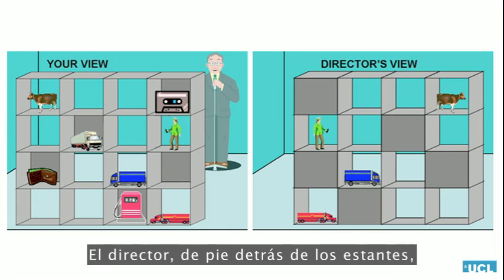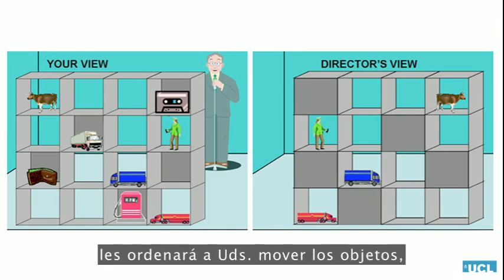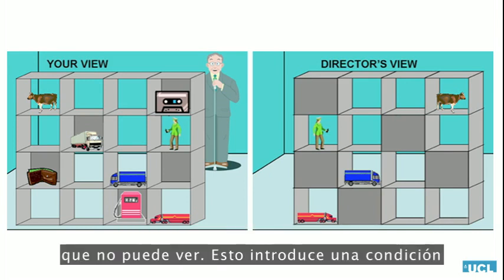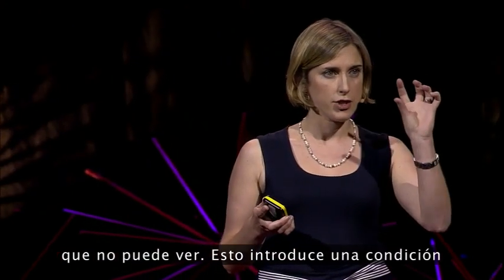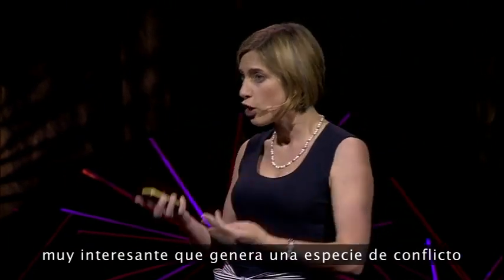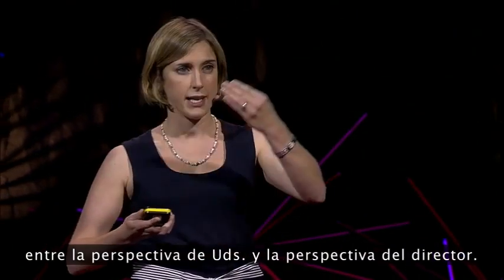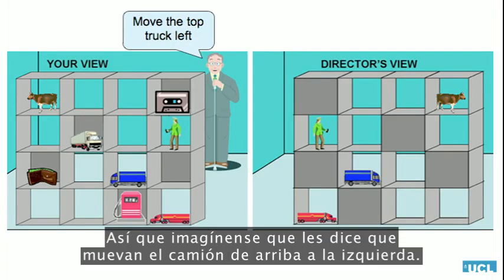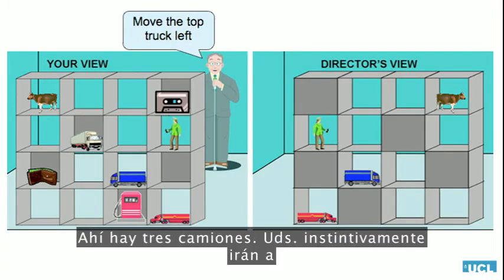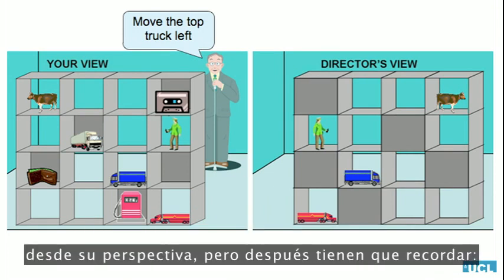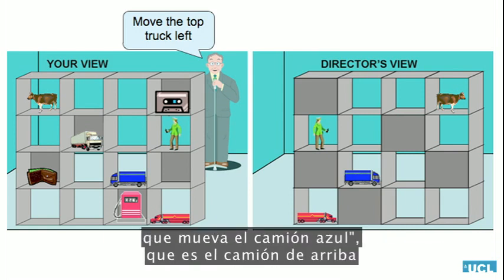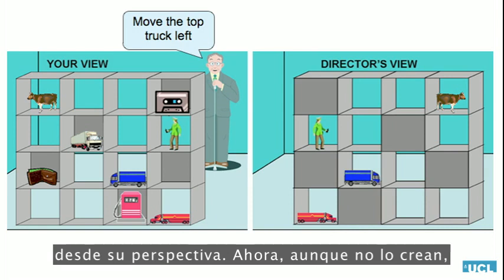The director standing behind the shelves is going to direct you to move objects around. But remember, he's not going to ask you to move objects that he can't see. This introduces an interesting condition where there's a conflict between your perspective and the director's perspective. So imagine he tells you to move the top truck left. There are three trucks. You'll instinctively go for the white truck, because that's the top truck from your perspective. But then you have to remember — he can't see that truck, so he must mean the blue truck, which is the top truck from his perspective.